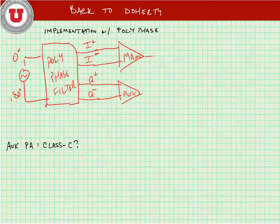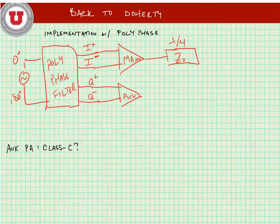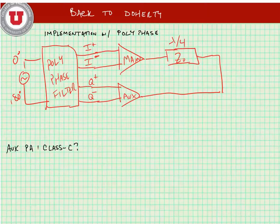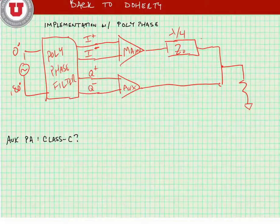Out of our main PA, we have our quarter wave delay element. We could use the lumped approximation for this one. You can see that the polyphase filter at least got rid of one of the transmission lines that we might have had to use.